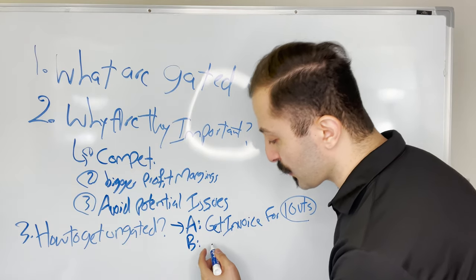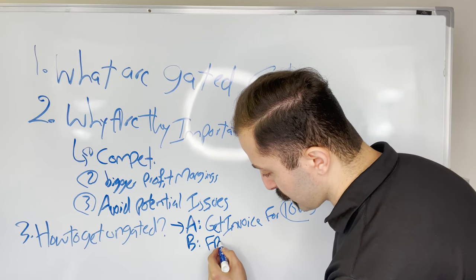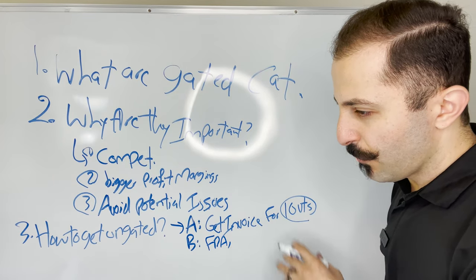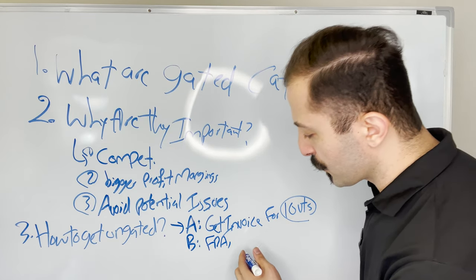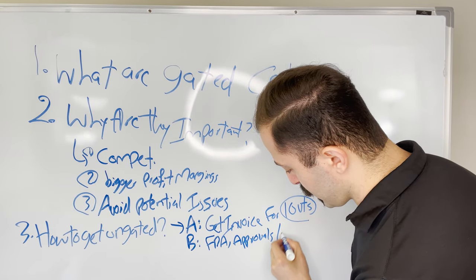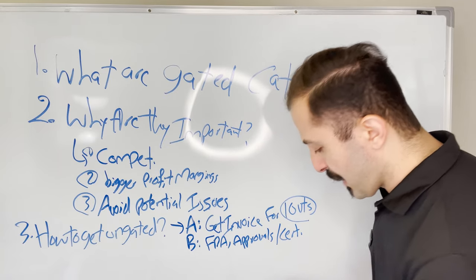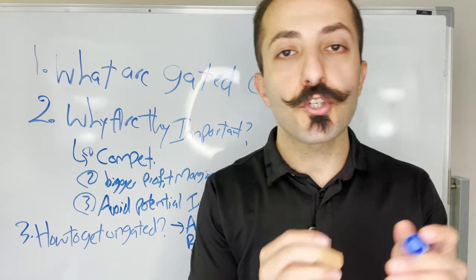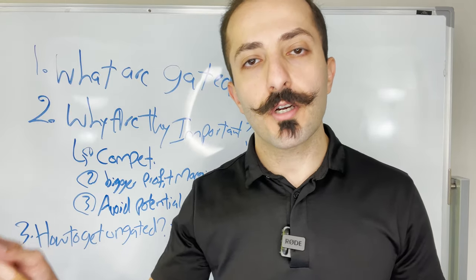Now, depending on the category, you're going to need things like FDA approvals. Most of them is FDA approval, but there are other approvals or certifications that are required. And usually when you go to your supplier, your supplier should know what are the things that are required.